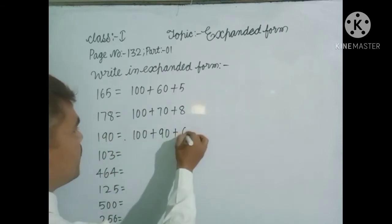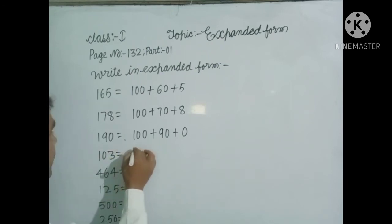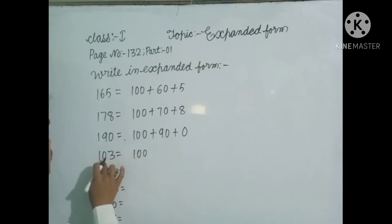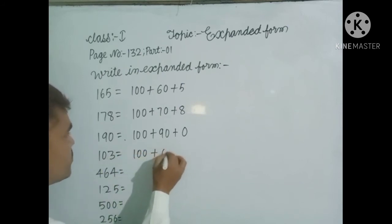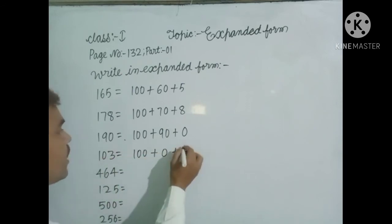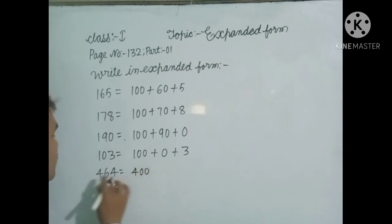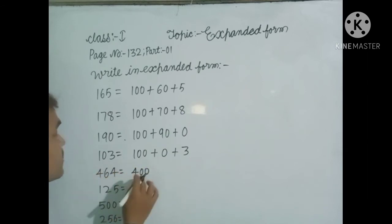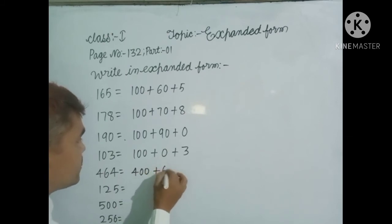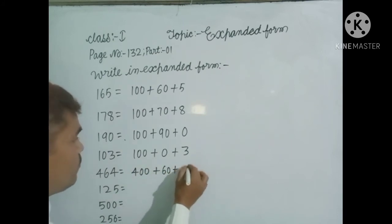Next question: the hundreds digit is 4 hundreds, so write down 400. The tens digit is 6 tens, that means 60. And the ones digit is 4 ones, so write down 4.